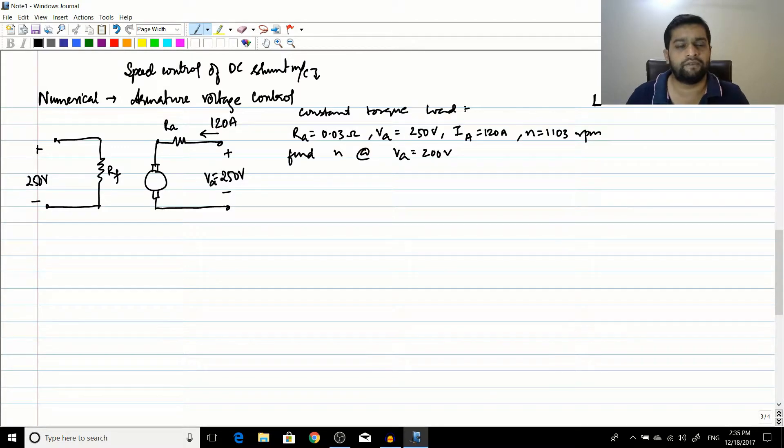Hello friends, in the previous session we have seen a problem on the speed control of DC shunt motor using RF control. In this session we will see a numerical which is based on armature voltage control.